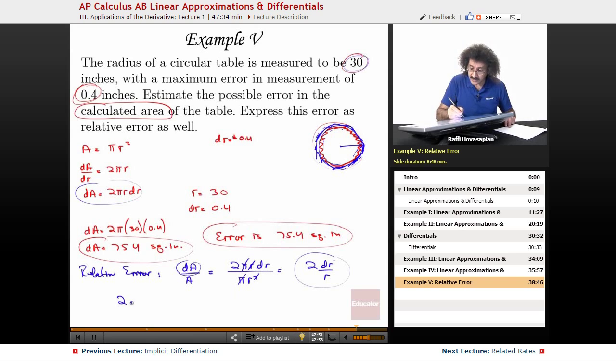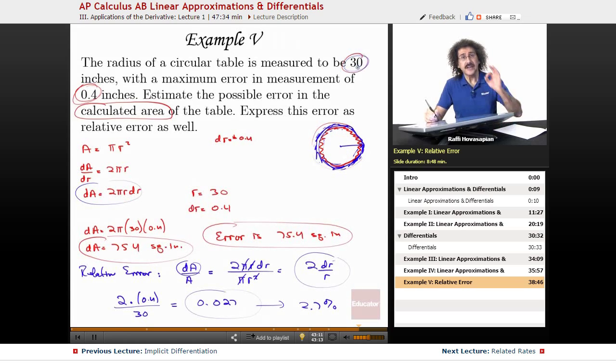So here, the relative error is 2 times dr, 0.4, over r, which is 30, equals 0.027. If I express this as a percentage, I would move this over, and that would be 2.7%. That means that if the error that I make in measurement from 30 is 0.4,